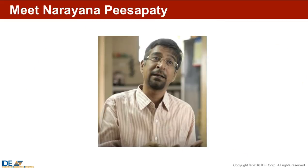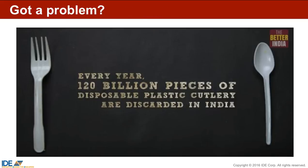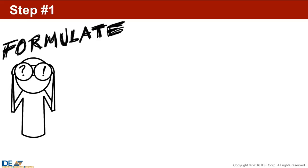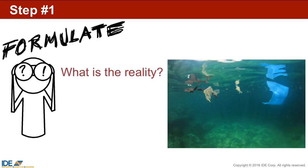Narayana Pissapati is from India. He discovered that in India, 120 billion pieces of plastic cutlery — forks, knives, spoons — end up in the trash in a short period of time, with devastating consequences for the environment and human beings. Step 1 is to formulate the problem — explain it so you know what you're trying to solve. Narayana identified that our oceans contain over 100 million tons of plastic, which eventually break down into microplastics but can take 450 to 1,000 years to fully degrade.